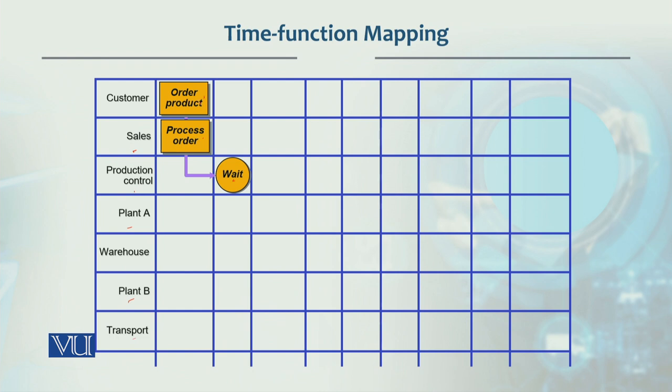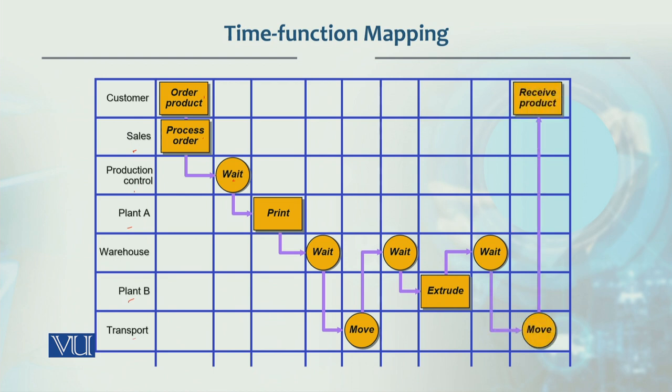The customer has ordered the product and then the production control is started. In the wait, this indicates the wait of print, then it was in the print plant A, then the wait of work in process. In the wait, it is needed, move in and then when it went to the warehouse, it stored kiya. Warehouse se yeh extrude ke andar gaya plant B mein and then again store kiya aur us ko move karkar receiving department ke paas chala gaya.